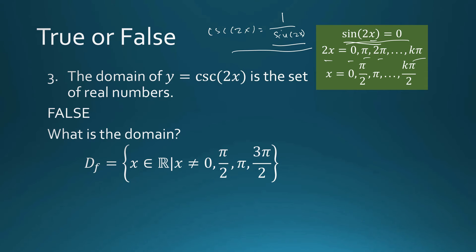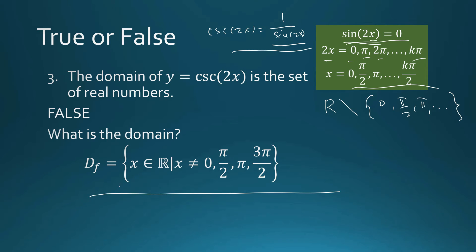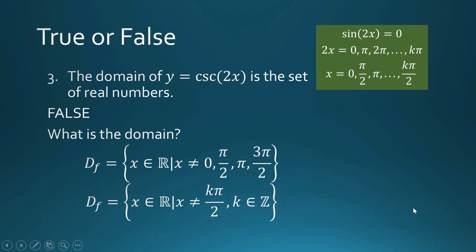The domain of cosecant of 2x is the set of real numbers except those values where x = 0, π/2, π, and so on. In general, the domain is the set of real numbers excluding x = kπ/2, where k is any integer.